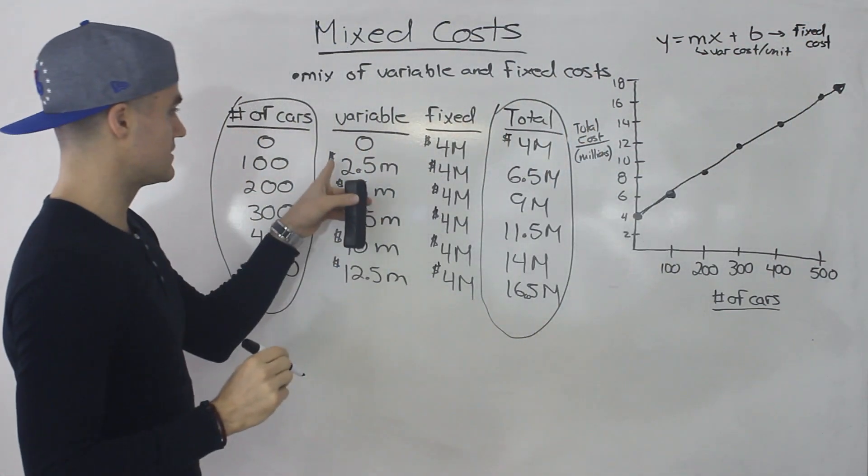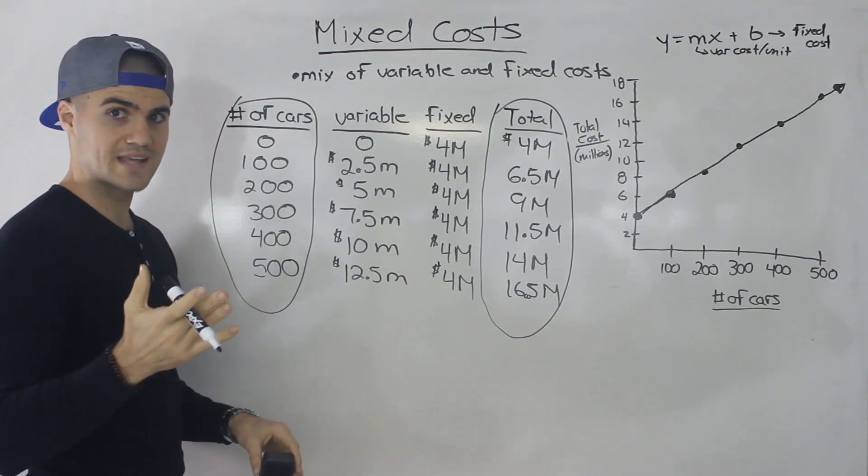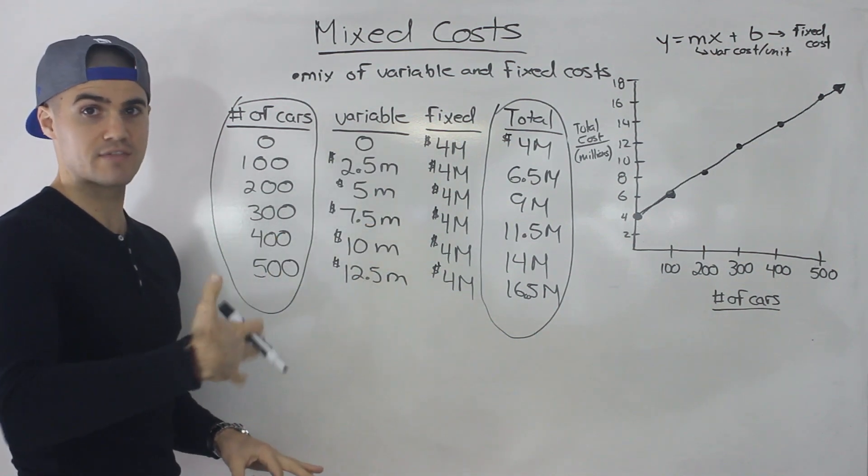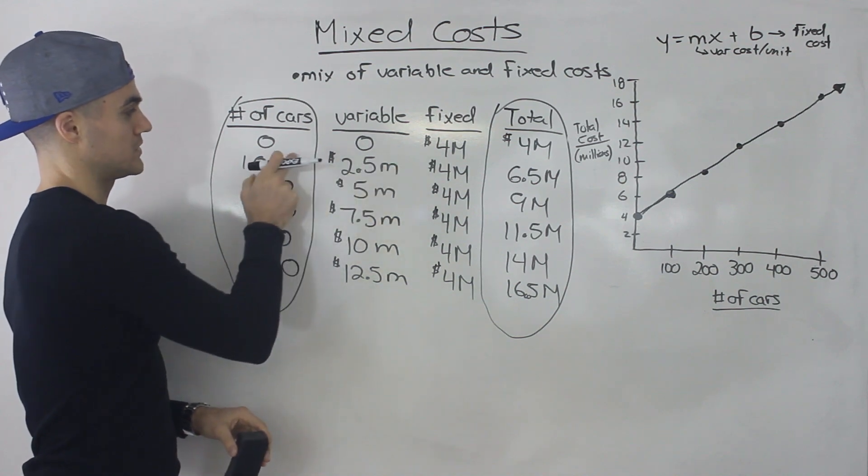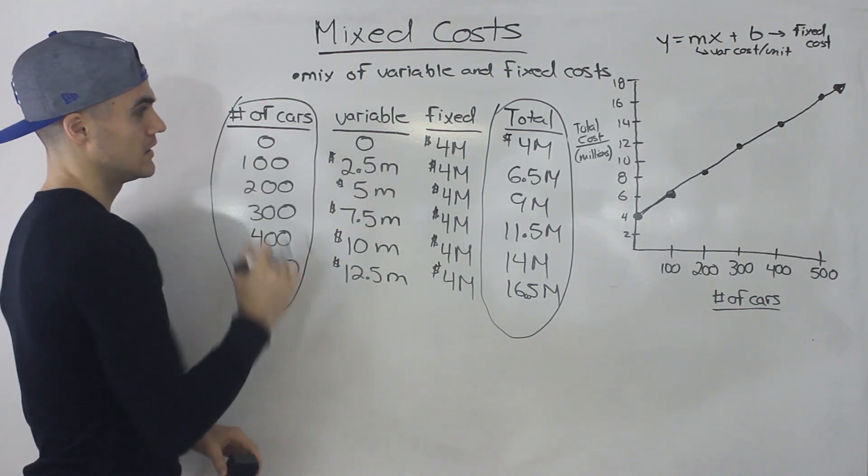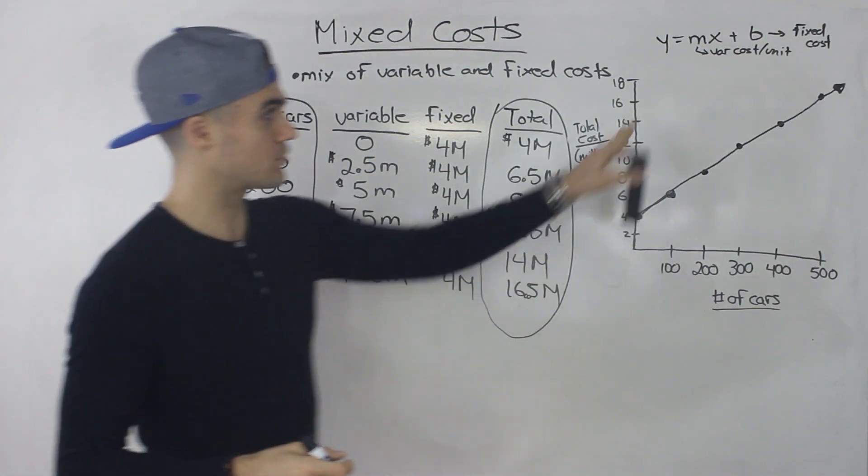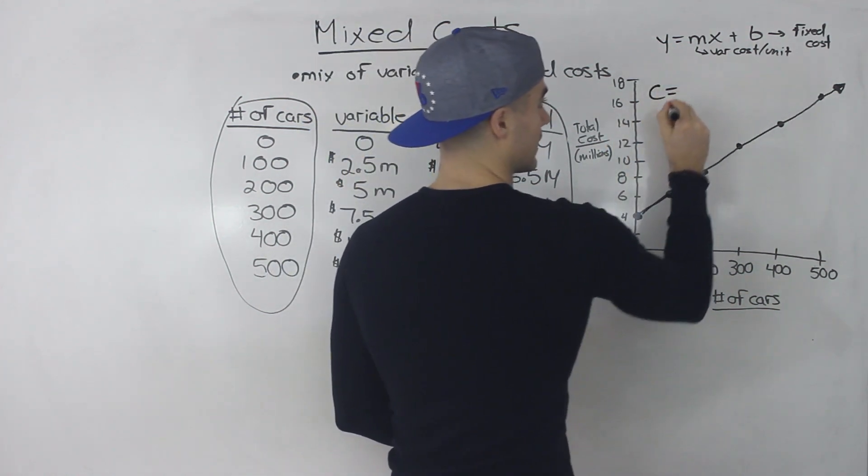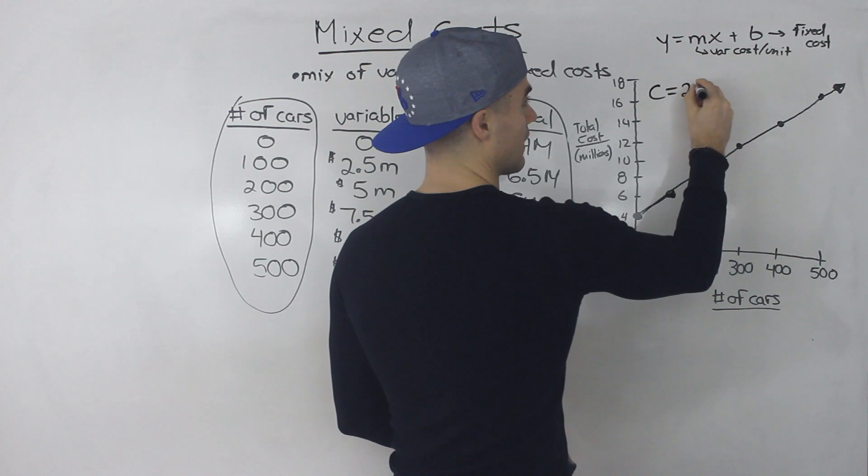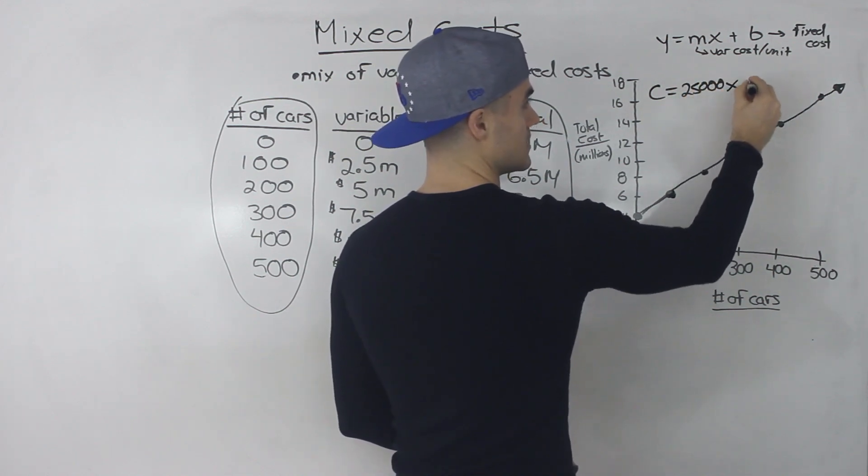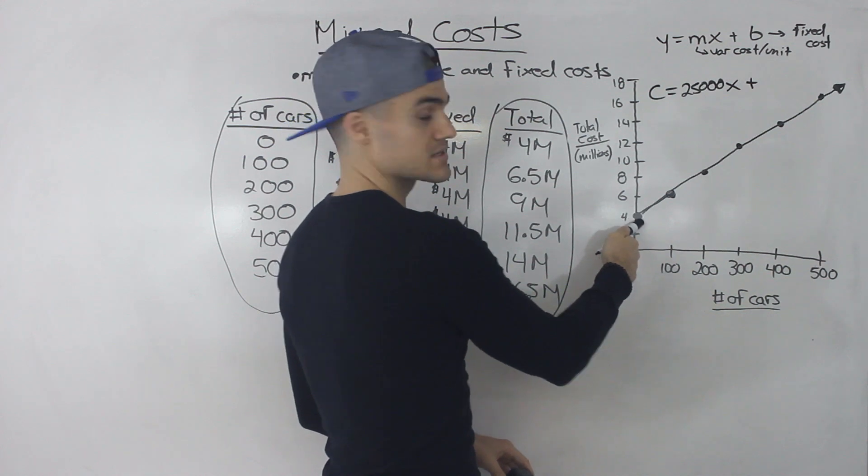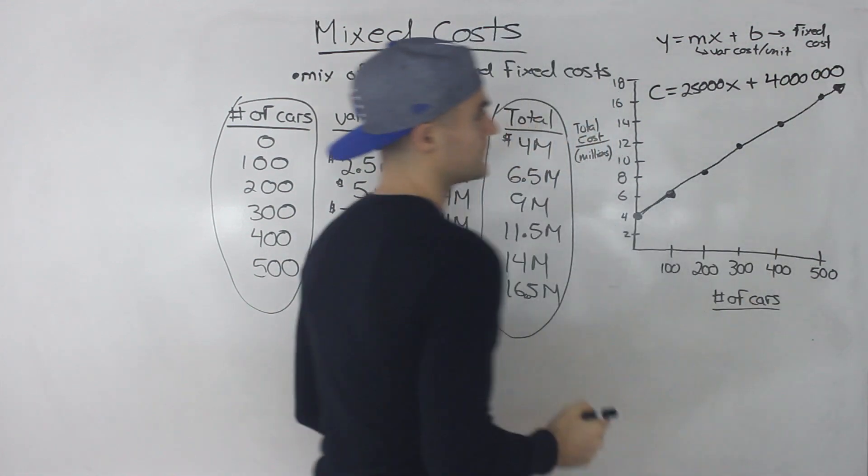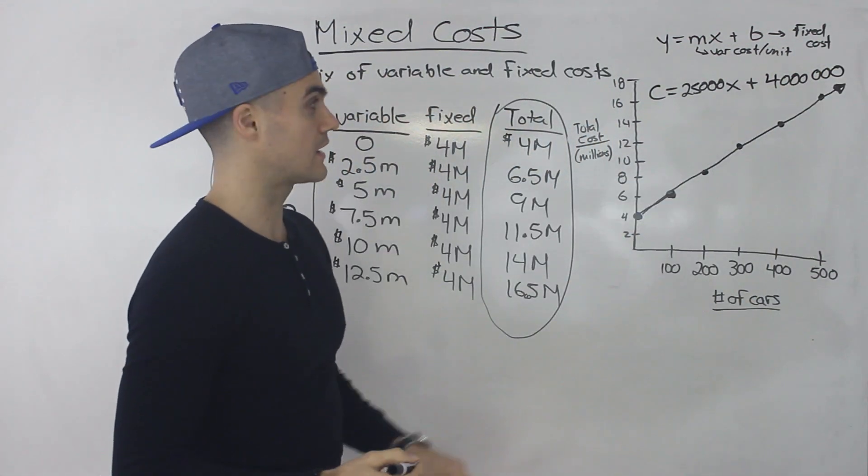So if you remember, how do we get these figures over here? Well, we said in the variable cost video that to produce a car, the variable cost is going to be 25,000 per car. So that's how we got this two and a half million. We took the 25,000 multiplied it by 100. So the variable cost per unit or per car in this case is 25,000. So we know if we make a cost equation, it's basically going to be 25,000x plus that fixed cost of $4 million. That's the equation of this line over here.